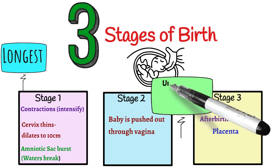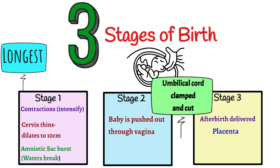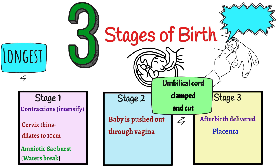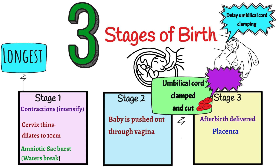It was commonly practised that the umbilical cord would be clamped and cut immediately as soon as the baby was born. However, science has moved on and this is not considered best practice. It still does happen in certain medical situations, but it's generally believed that delayed umbilical cord clamping and cutting is best for baby. The placenta contains around 100 mls of the baby's blood, so it's of benefit to the baby to get this blood back as it boosts iron levels. The World Health Organisation recommends waiting at least one minute before clamping and cutting the cord, and in the UK it's common practice to wait two minutes.